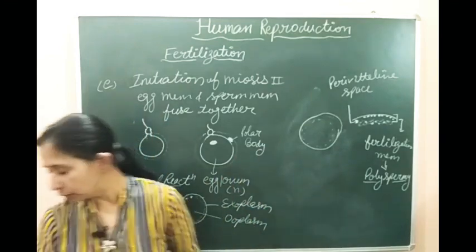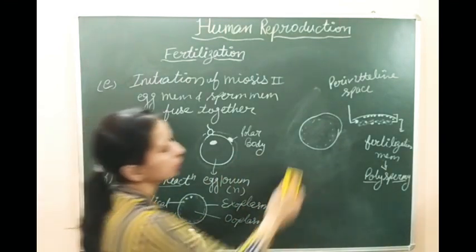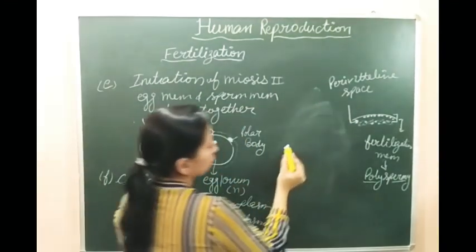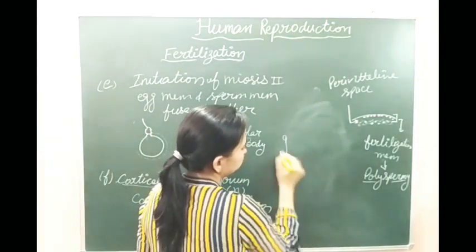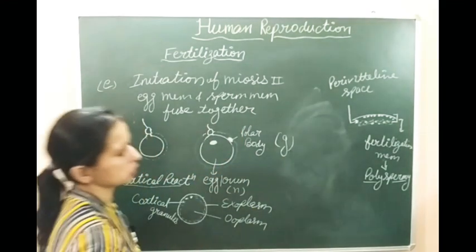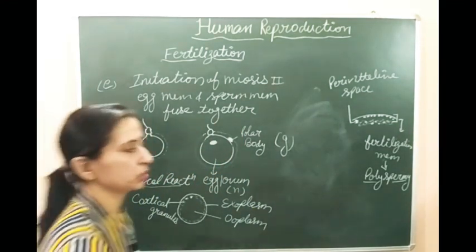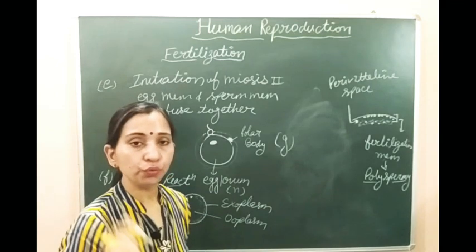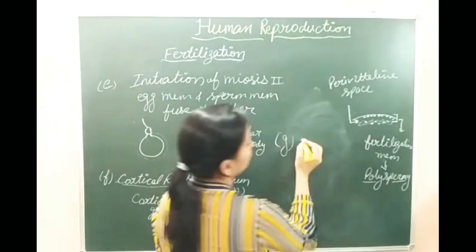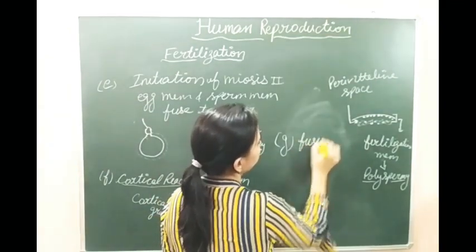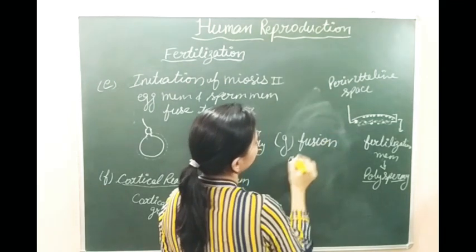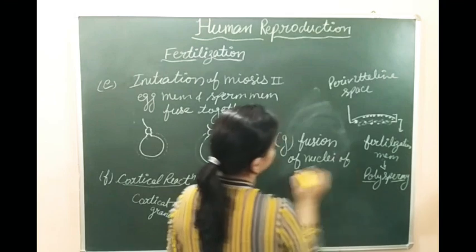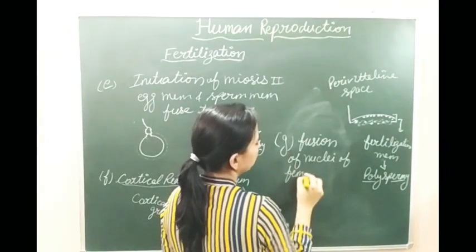After the fertilization membrane is formed, let's see what happens next. The next step will be the last step of the fertilization process, which is the actual fusion of the gametes - the fusion of the nuclei of the female and male gametes.